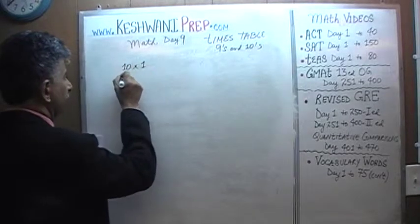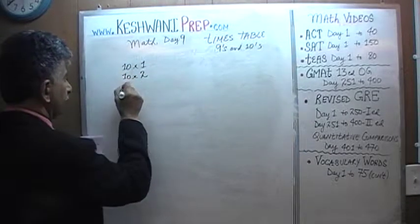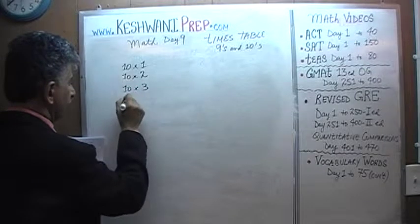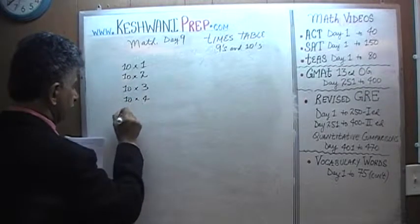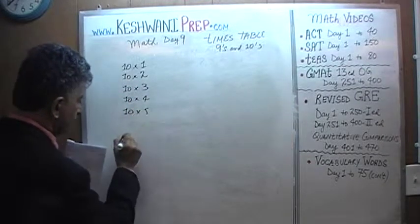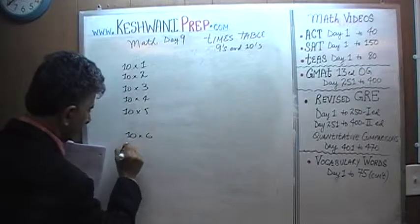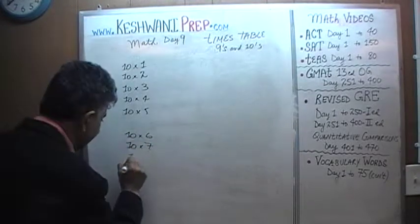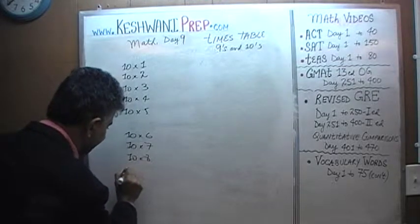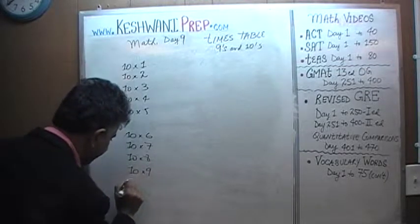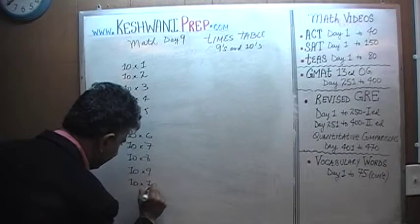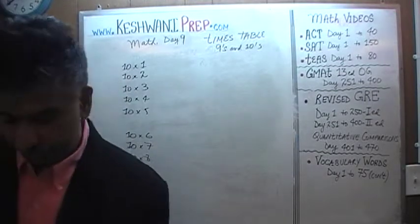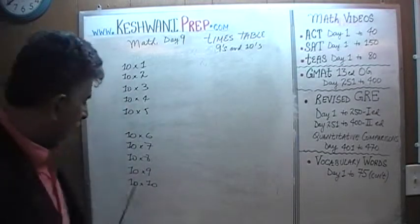Ten ones are. Ten twos are. Ten threes are. Ten fours are. Ten fives are. Ten six are. Ten sevens are. Ten eights are. Ten nines are. And how much will you have if you have ten tens? Ten tens are one hundred.